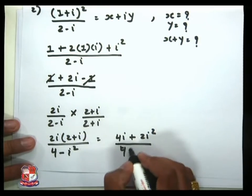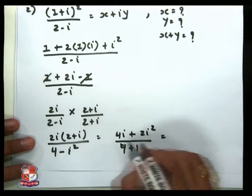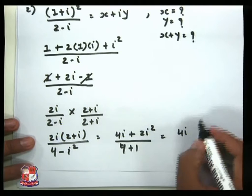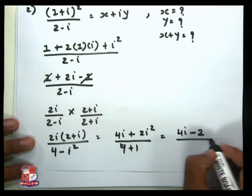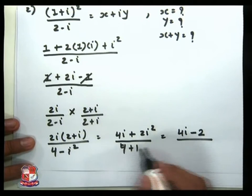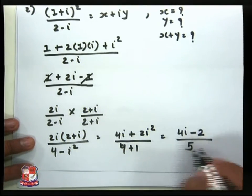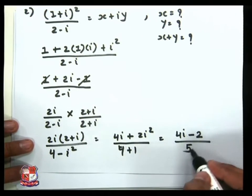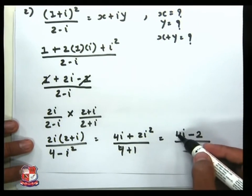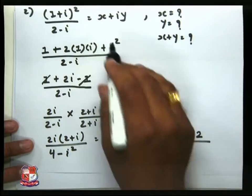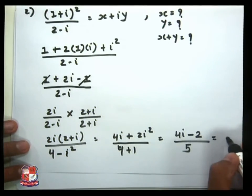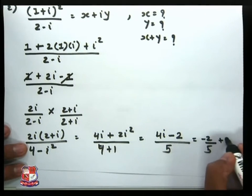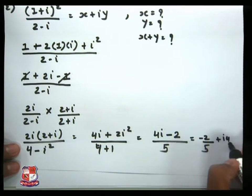Multiplying the numerator: 2i·2 = 4i, plus 2i·i = 2i². In the denominator, i² = −1, so 4 − (−1) = 4 + 1 = 5. The numerator simplifies: 2i² = 2·(−1) = −2. So we get (4i − 2) / 5.